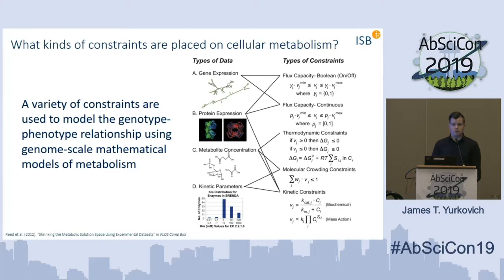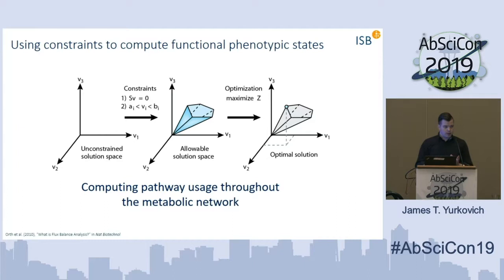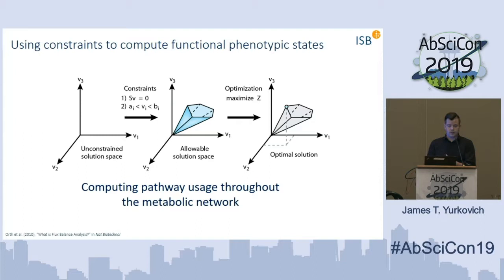If we have information on different kinetic parameters, we can model these mathematically and integrate this with the structure of the metabolic network. We can then compute a solution space where each point represents a feasible flux state of the network — different pathway usage. As we add constraints, we zero in on a biophysically and physiologically relevant set of fluxes, and eventually we can optimize and compute a maximal growth rate and predict what the flux state would be.